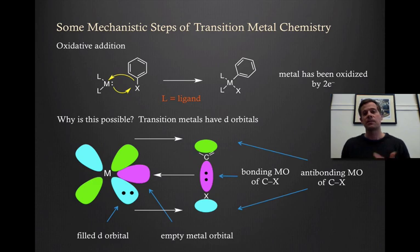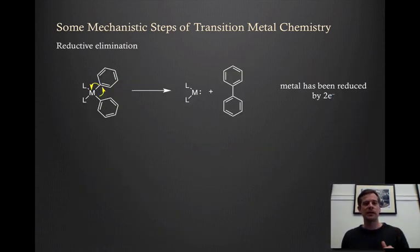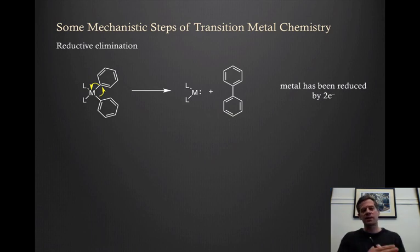All right. The next step that we want to understand is basically the reverse of that process. So reductive elimination. It's exactly the opposite. Oxidative addition and reductive elimination are just the forward and backward reaction. They're the same thing. But in this case, we're going to be concerned with reductive elimination happening with two different carbon substituents. So we're going to get to a metal that has two different carbon species attached to the metal, and that can basically do the opposite of an oxidative addition. It can eliminate out to reform the metal with that lone pair and then forge a bond between those two species. So in this case now, the metal will be reduced formally by two electrons compared to where it started in this intermediate. So reductive elimination. Two sides of the same coin.